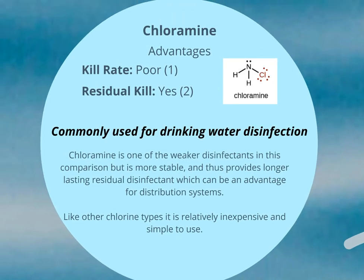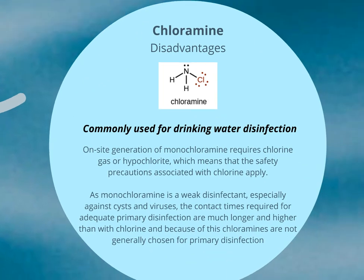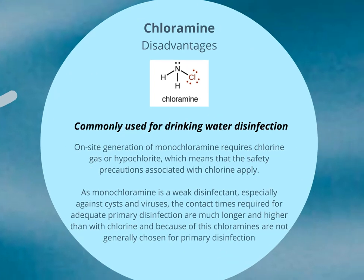Chloramine has a poorer kill rate than other disinfectants. It does have residual kill, so it's still used in drinking water disinfection. It's weaker than other disinfectants in this comparison, but because of its stability it provides a longer-lasting residual disinfectant, which can be an advantage for distribution systems. Like other chlorine types it's relatively inexpensive and simple to use. However, on-site generation requires chlorine gas or hypochlorite, meaning the safety precautions associated with chlorine apply. As it's a weaker disinfectant, especially against cysts and viruses, the contact time required for adequate primary disinfection is much longer, so chloramines are not generally chosen as a primary disinfectant.